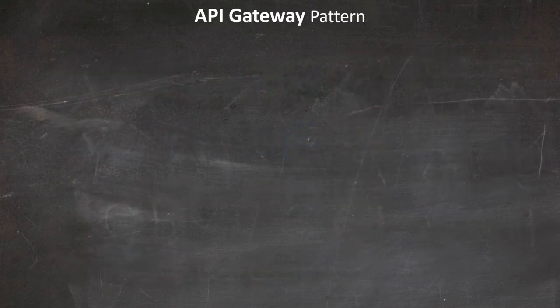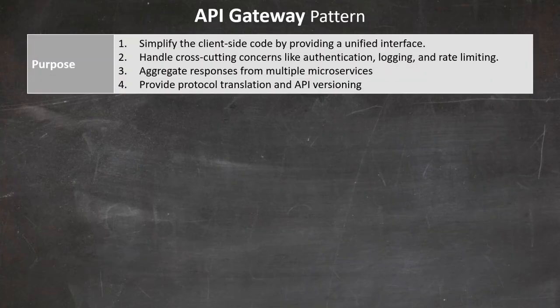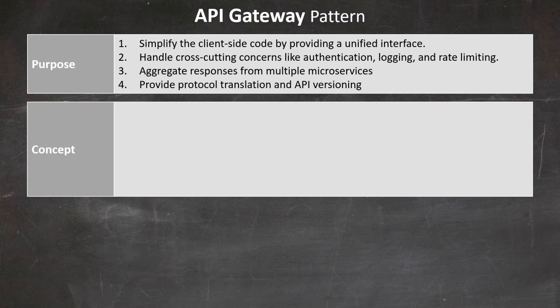Our next pattern is the API Gateway pattern, which serves as a single entry point for client requests in a microservices ecosystem. Its primary purposes are: to simplify the client-side code by providing a unified interface; to handle cross-cutting concerns like authentication, logging, and rate limiting; to aggregate responses from multiple microservices; and to provide protocol translation and API versioning.